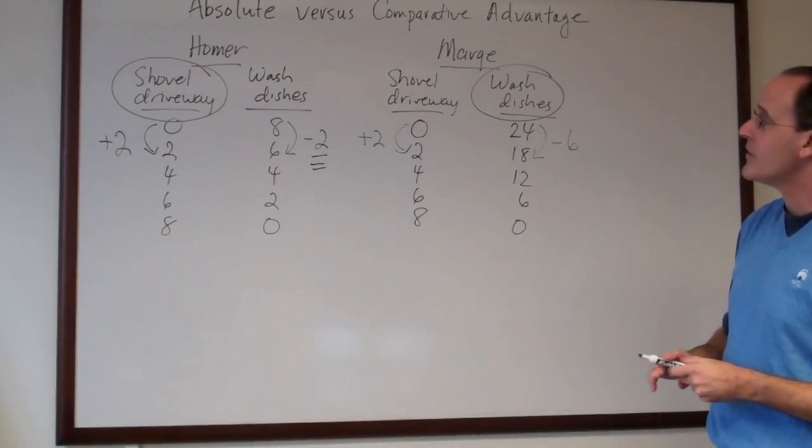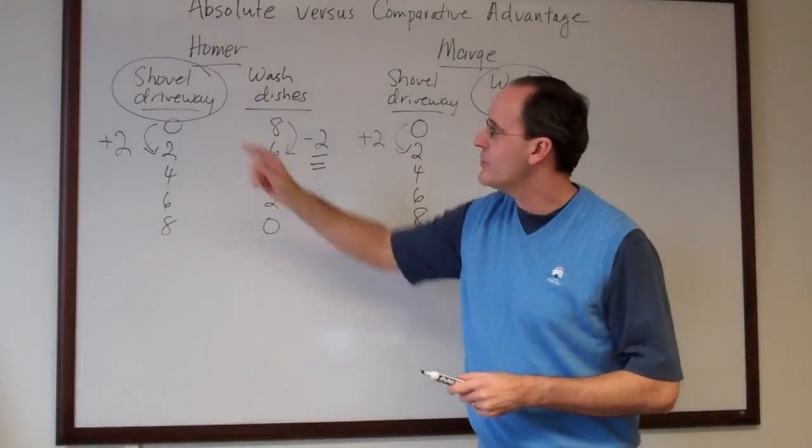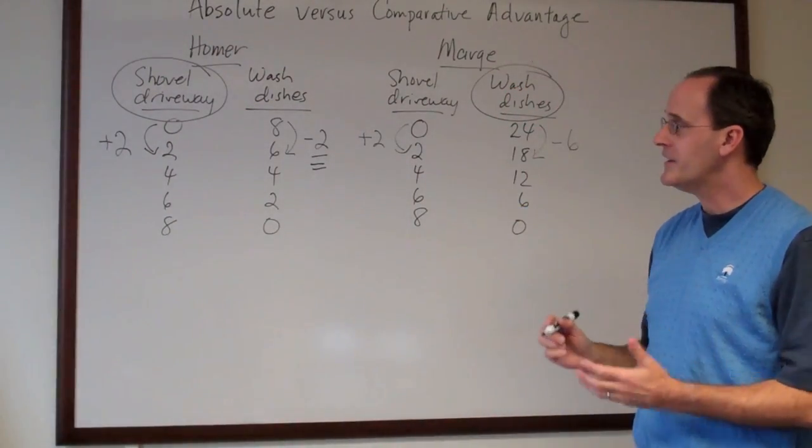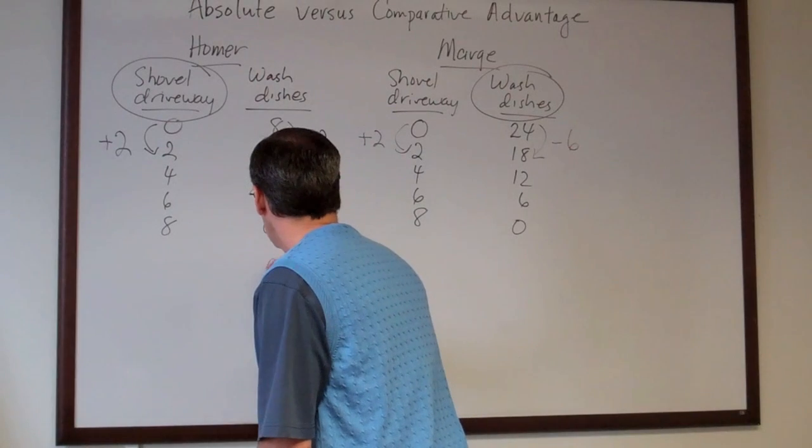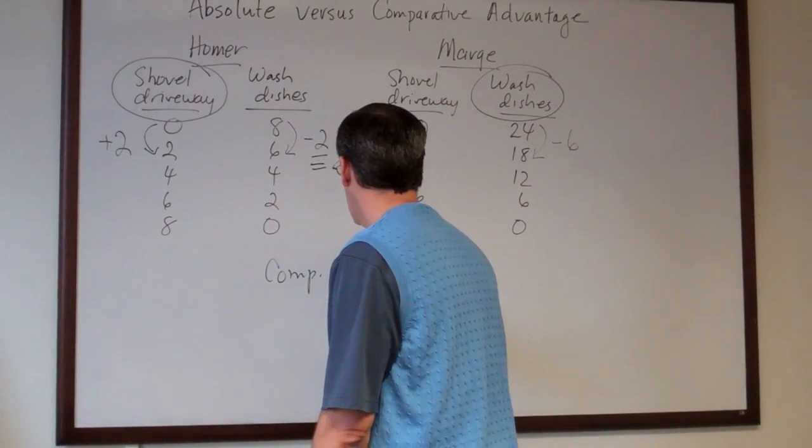Having established then that Marge should wash the dishes and Homer should shovel the driveway, let's think about how much they could produce. So with comparative advantage,